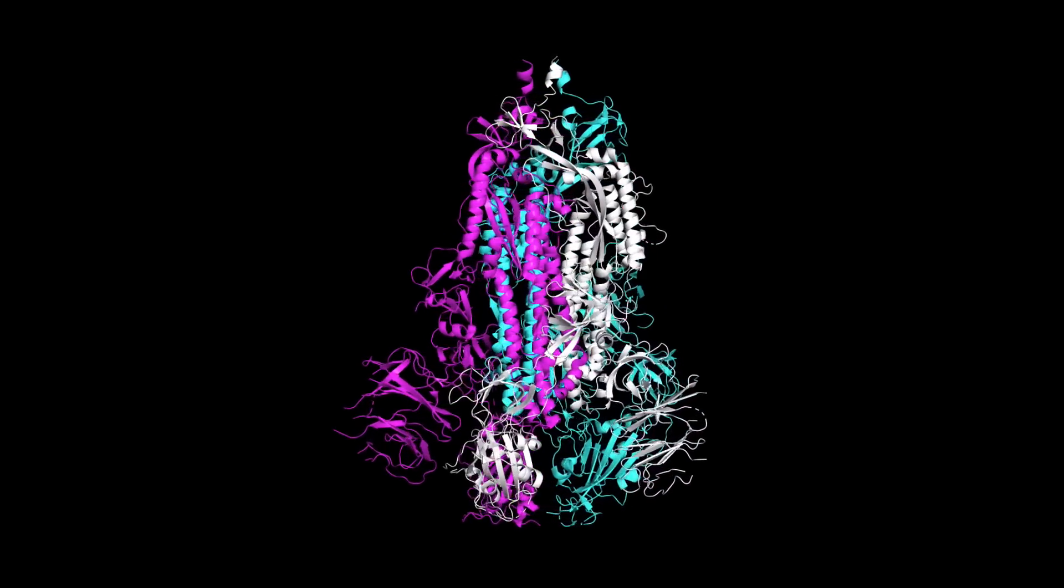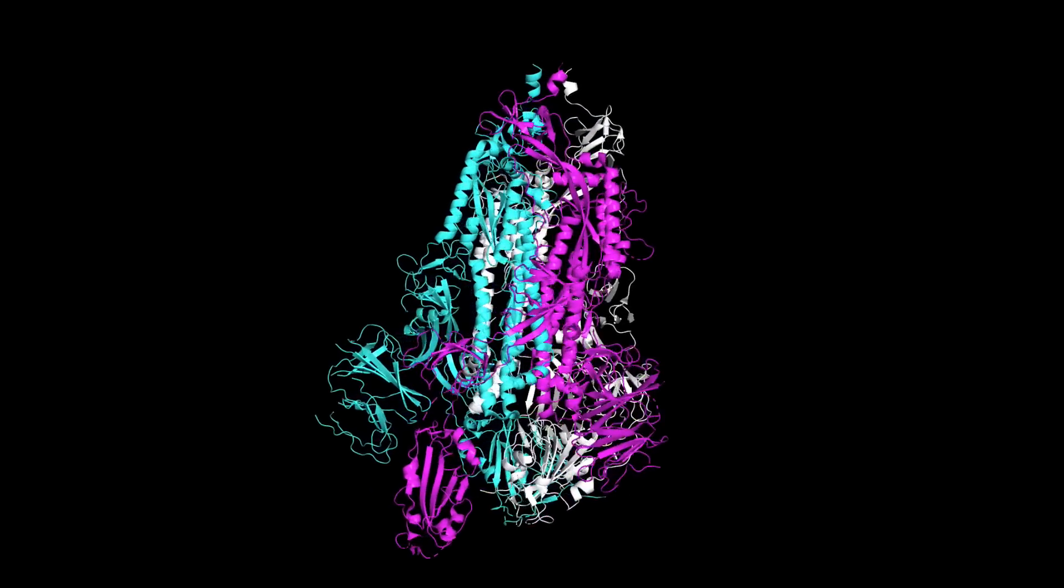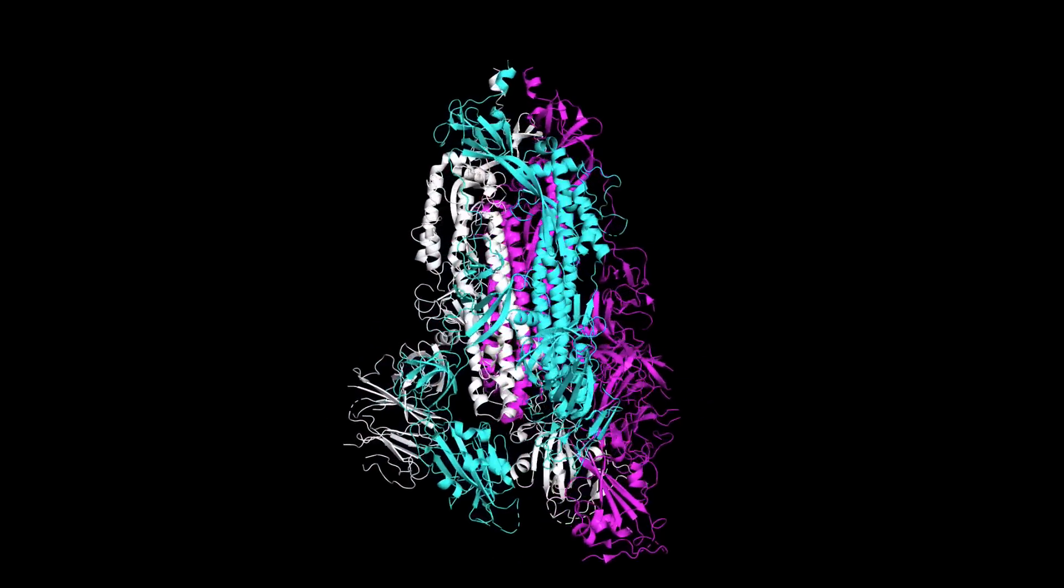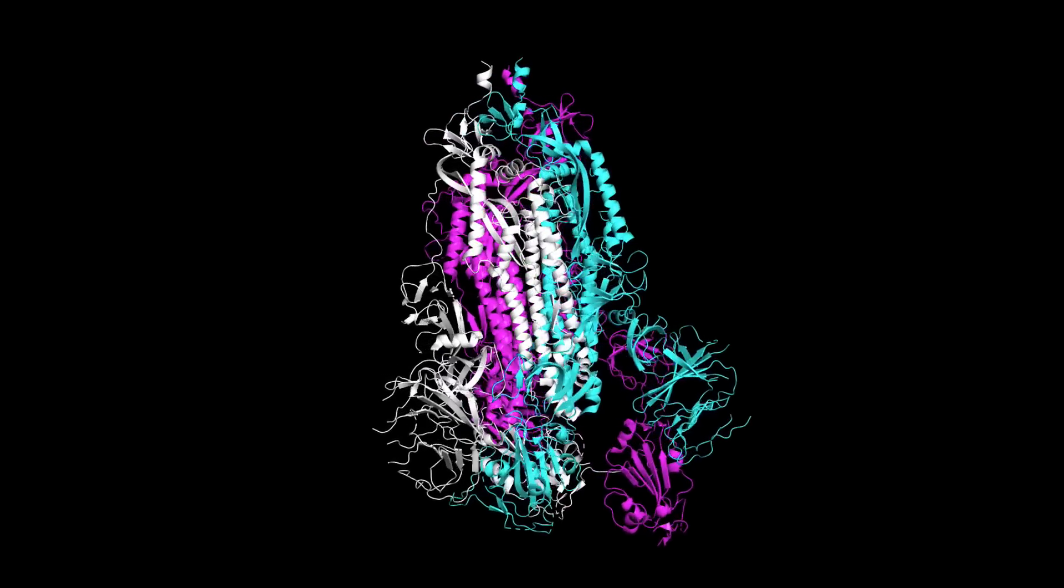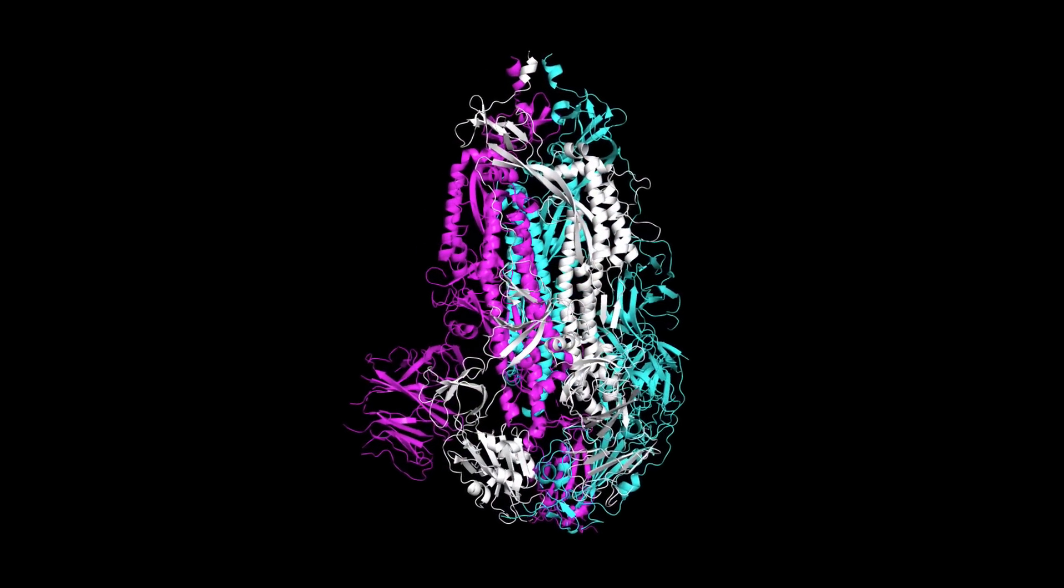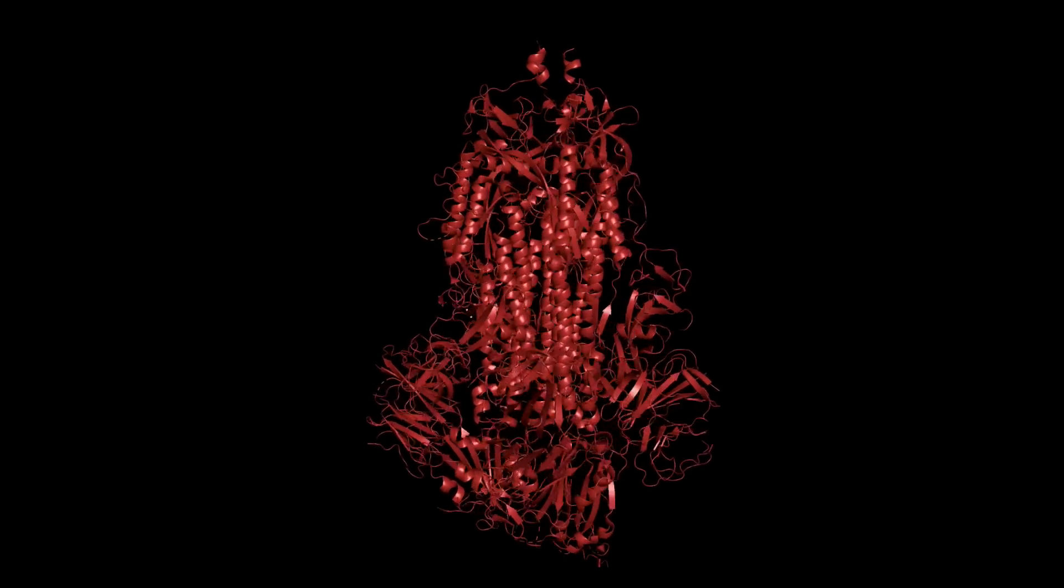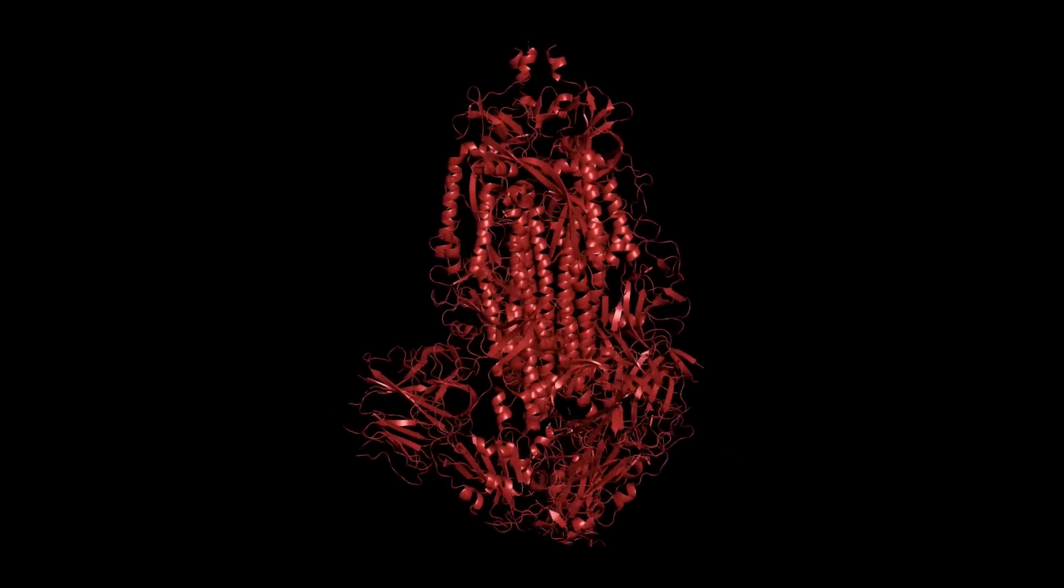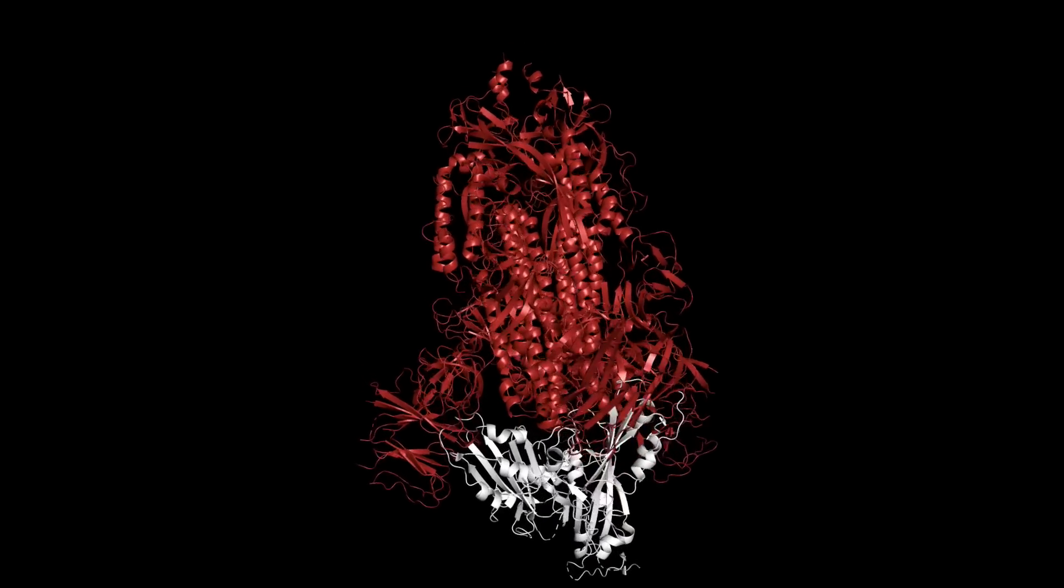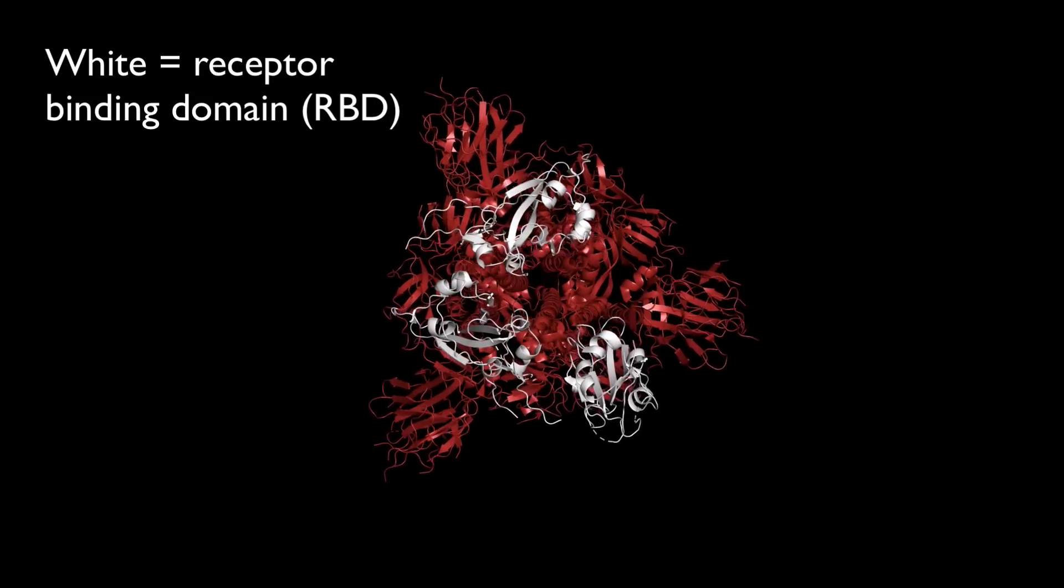The spike protein is actually made up of three intertwined chains that have identical amino acid sequences. Each of these chains is called a protomer. However, the protomers do not have identical three-dimensional conformations. Let's go back to our original color scheme. We can see the conformational difference in the protomers by examining a section of the spike protein that is critical to the viral life cycle, the receptor binding domain, or RBD.